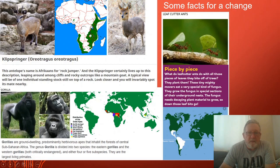And then we've got our gorillas. You can see where they come or are found in Africa. They're ground dwelling and predominantly herbivorous. There's a good high modality word. Predominantly means mainly but it's a much more interesting word. And they inhabit forest areas of the central sub-Saharan Africa. The genus gorilla is divided into two species, the eastern gorillas and the western gorillas, both critically endangered. So not just endangered, numbers are really low. Those are further broken into four or five subspecies and they are actually the largest living primates.